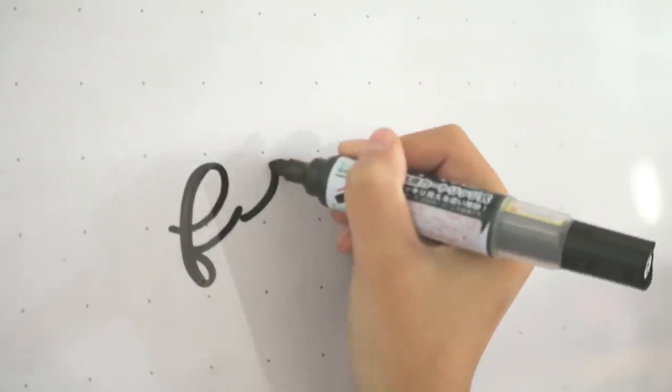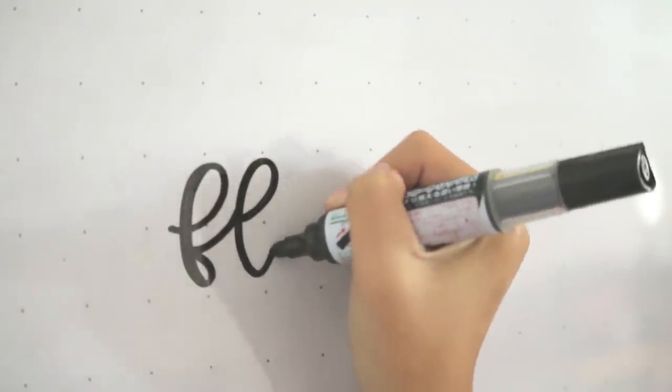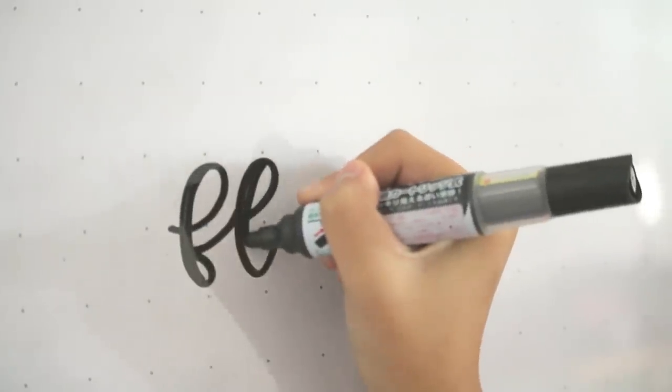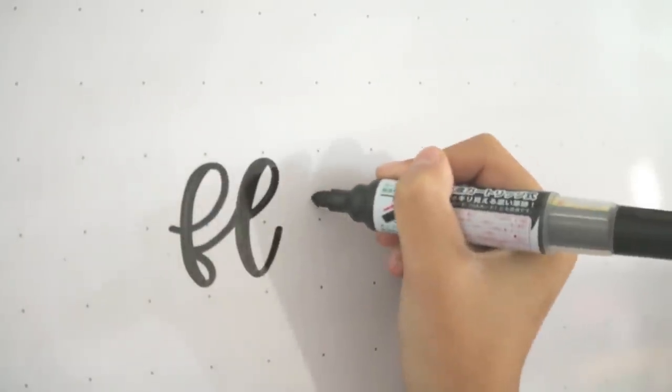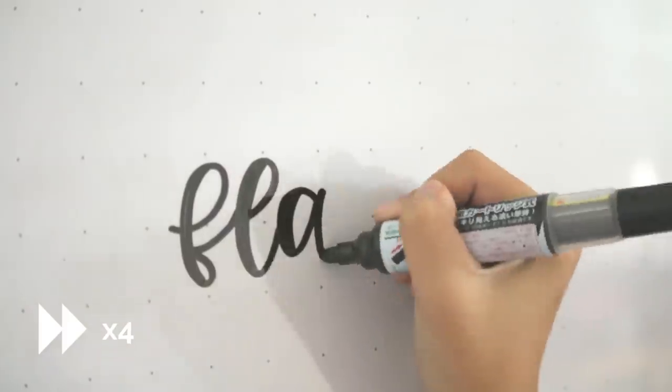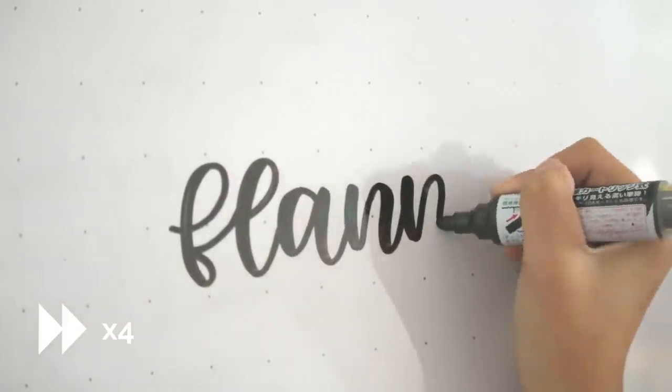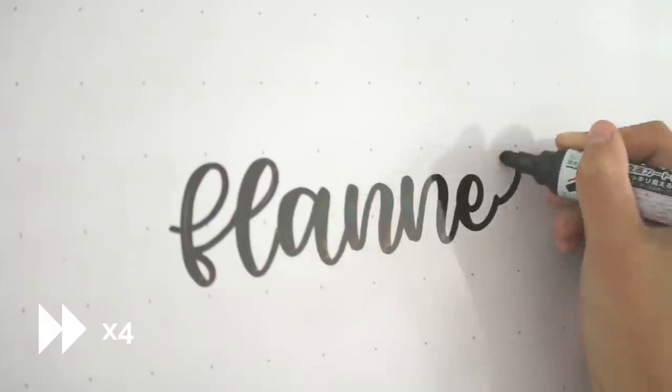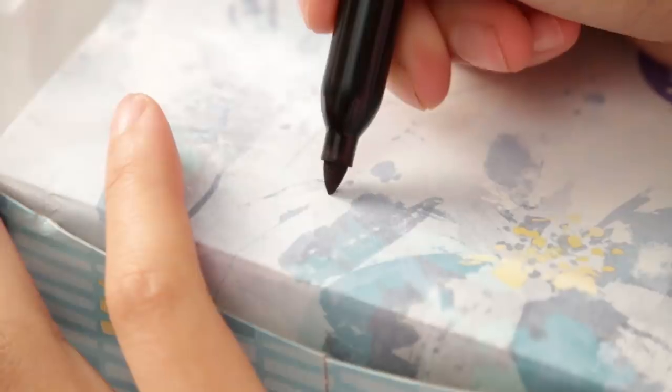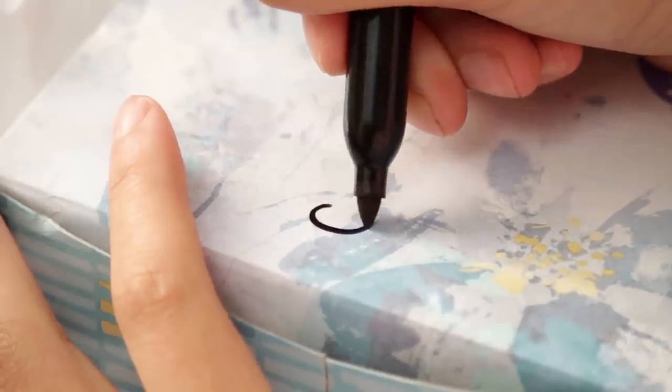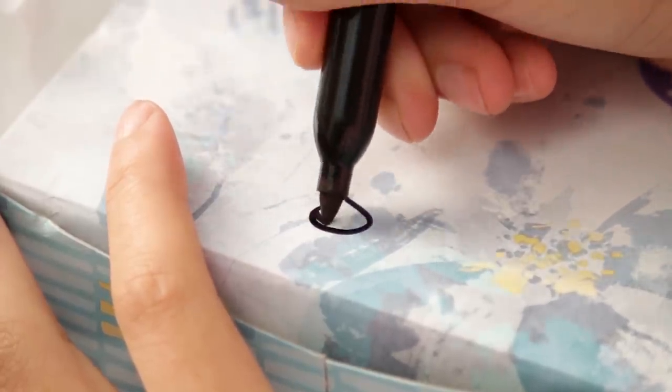In fact, you can do this with a whiteboard marker to create calligraphy on a whiteboard, or you can use a Sharpie to label your possessions with calligraphy.